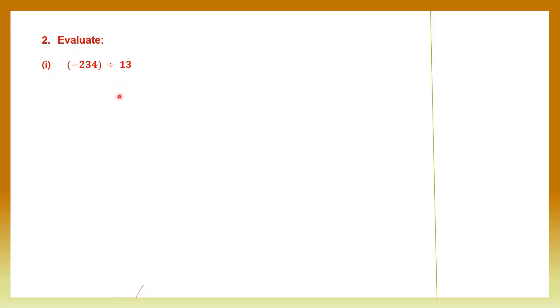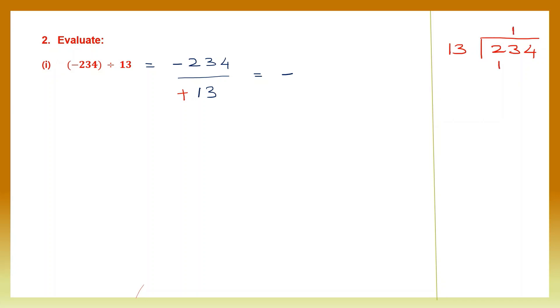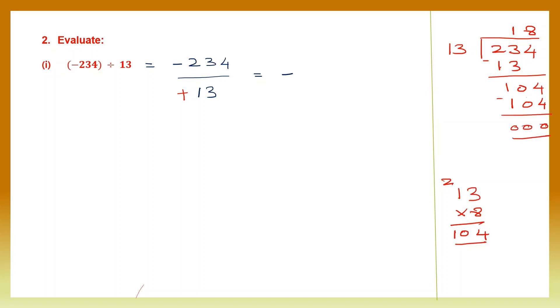Question 2, evaluate — find the answer when you divide these two. We have minus 234 divided by 13. 13 doesn't have a sign so it gets the plus sign. Signs are different, so the answer is negative. Dividing 234 by 13: 13 ones are 13, bring down 4 to get 104. 13 into 8 is 104. Our quotient is 18, so the final answer with the sign is minus 18.